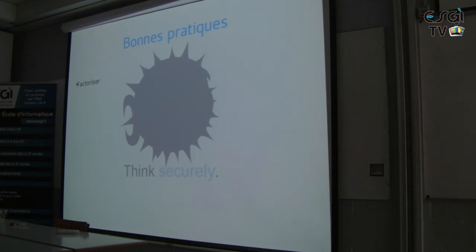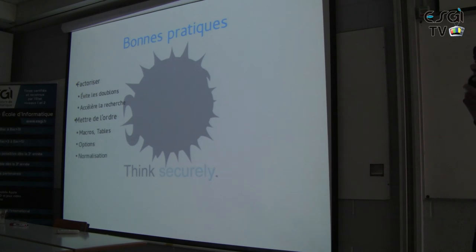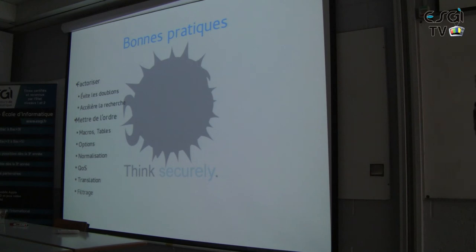Here are good practices for a firewall, especially with PacketFilter. The first thing is to factorize your rules. If you see two rules that are nearly identical, try to see if you can combine the IPs in a table, etc. The more you accelerate lookups, the more important your data throughput will be. On a heavily solicited network you will gain in latency. Use macros and tables. The recommended order to write the rules is: macros first, then options, then normalization — I invite you to look at the documentation — then QoS, then translation (NAT and redirection), then filtering. That's all.